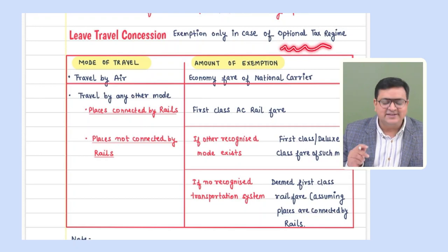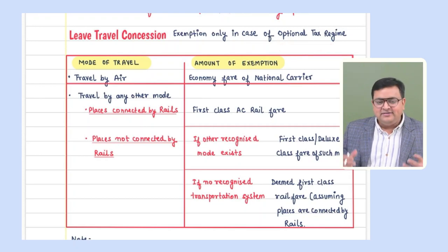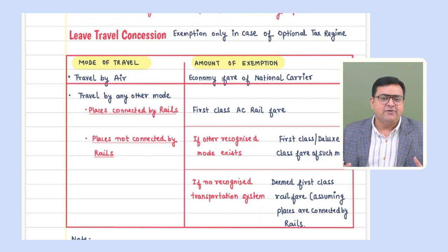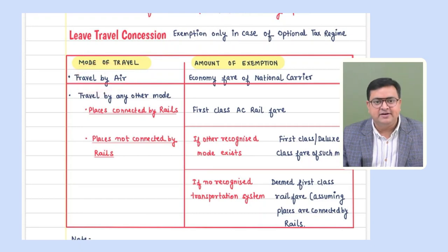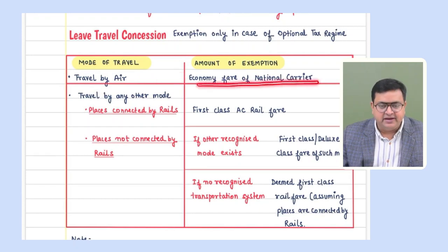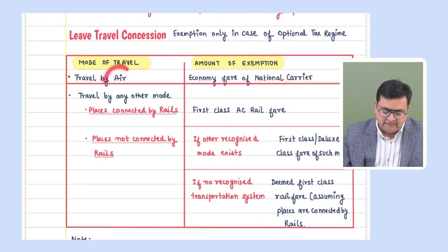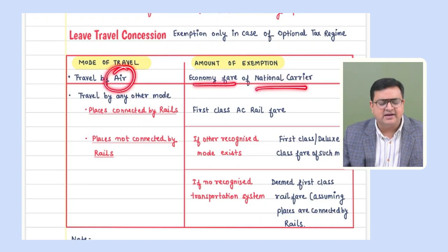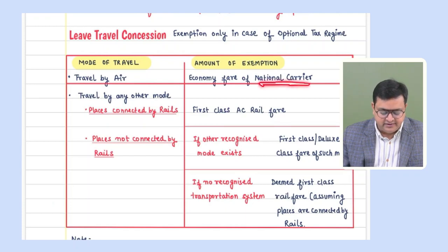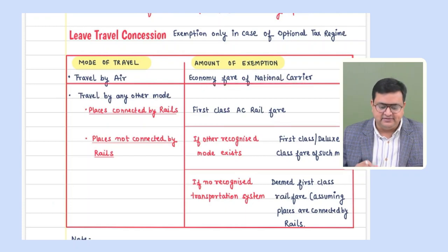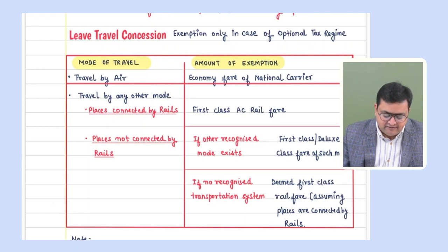For those following the optional tax regime: if the mode of travel is by air, the exemption can be up to the economy fare of the national carrier — Indian Airlines or Air India, not Indigo or other airlines. Not business class — economy fare of the national carrier. If traveling by any other mode, we check whether the origin and destination are connected by rail.